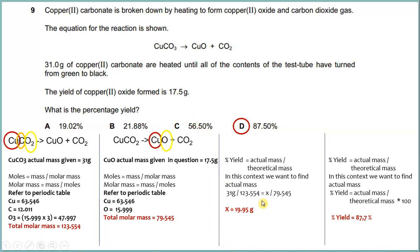To find the percentage yield of copper(II) oxide after heating copper(II) carbonate, we apply: percentage yield = (actual mass ÷ theoretical mass) × 100. Here that is (17.5 ÷ 19.95) × 100, giving a percentage yield of 87.7%. So the answer for question nine is D.